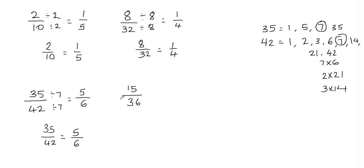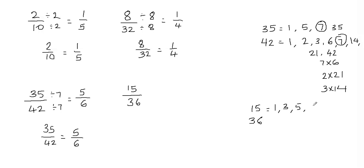Let's look at this fraction: 15 over 36. Let's list down the factors of 15 and 36. The factors of 15 are going to be 1, 3 — because 3 times 5 is 15 — and 5, because whenever you have a 5 at the unit's place, that number is always divisible by 5. So 5 is a factor of 15, and obviously 15 is a factor of 15.